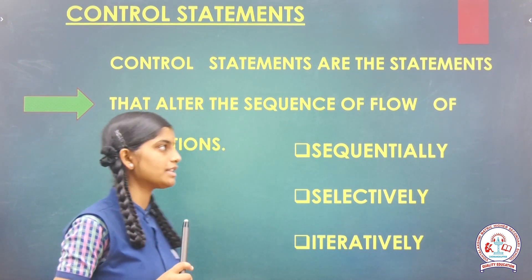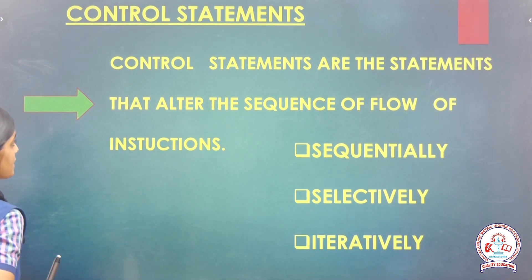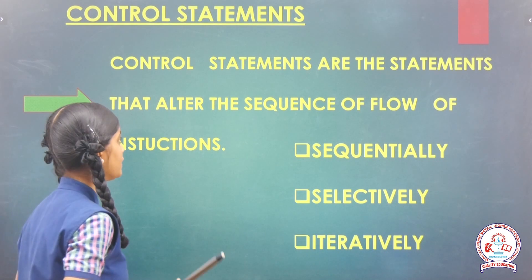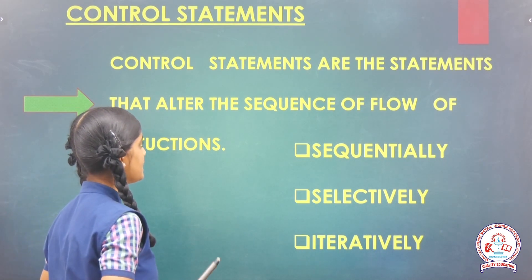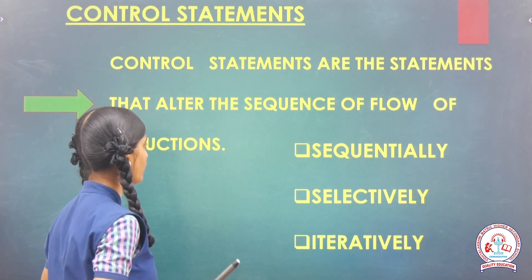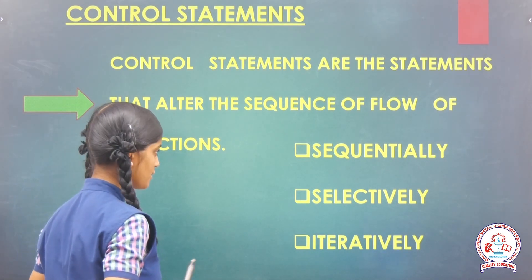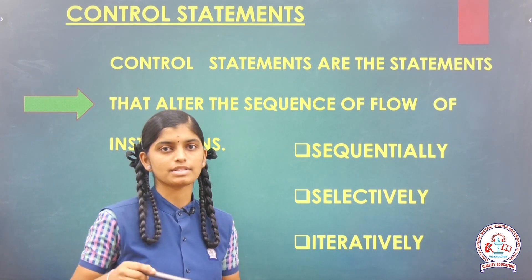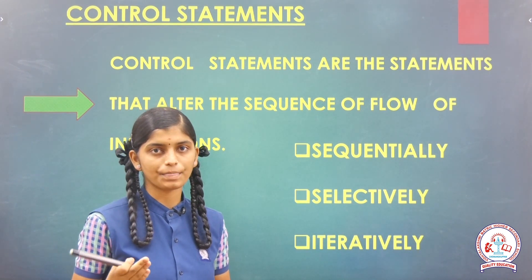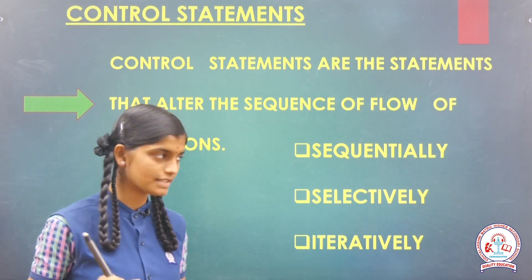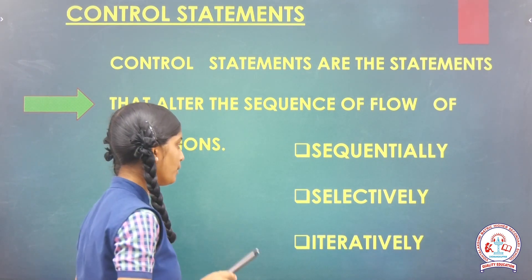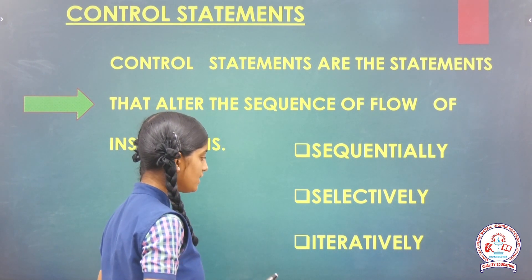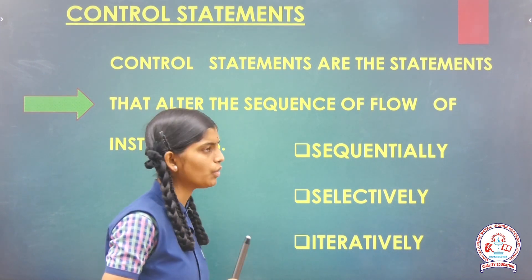So, what is a control statement? Control statements are the statements that alter the sequence of flow of instructions. These control statements are made in three ways: first, sequentially; second, selectively; third, iteratively.